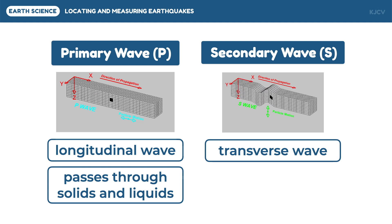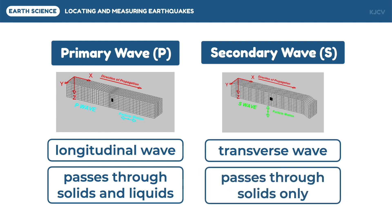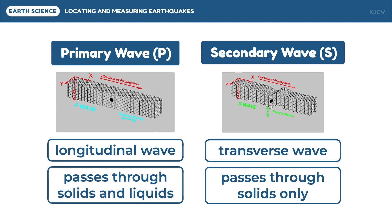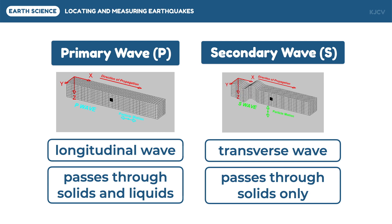On the other hand, secondary waves can only pass through solid regions of the earth's interior. This means that if a seismic wave originating from the mantle propagates, it will just be absorbed in the outer core since that layer is liquid. If the seismic waves propagate going to the surface, they will be trapped just beneath the surface of the earth and will appear as the stronger vibrations.